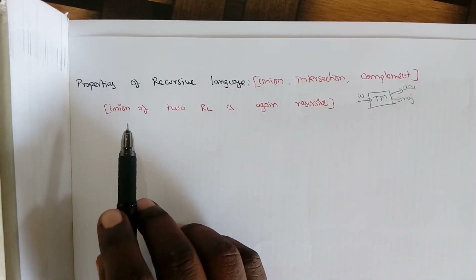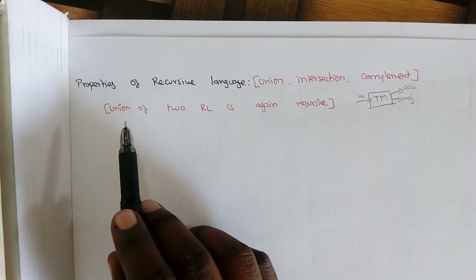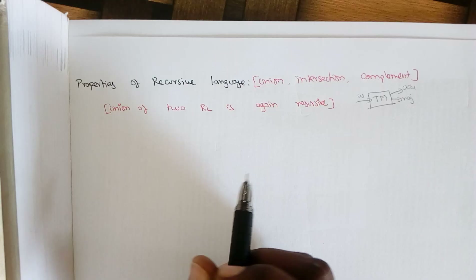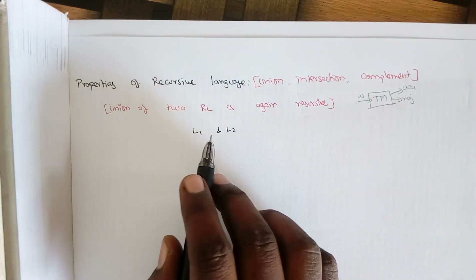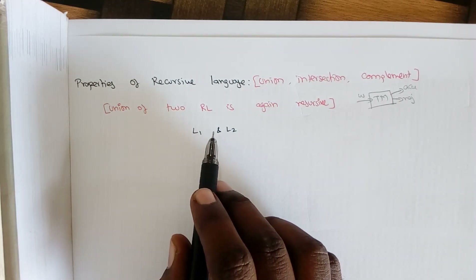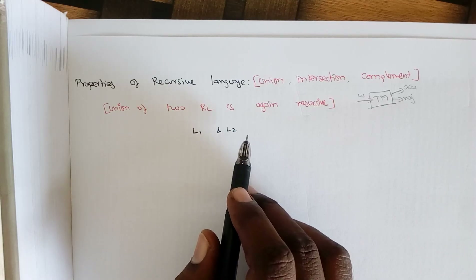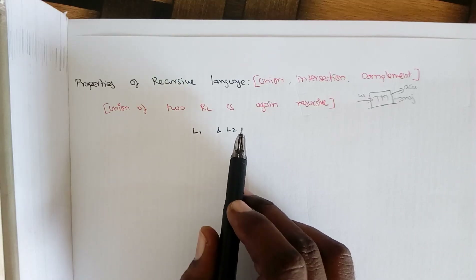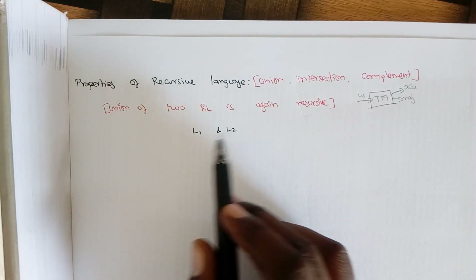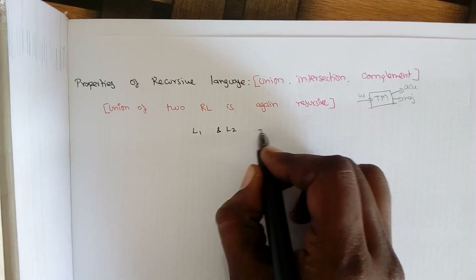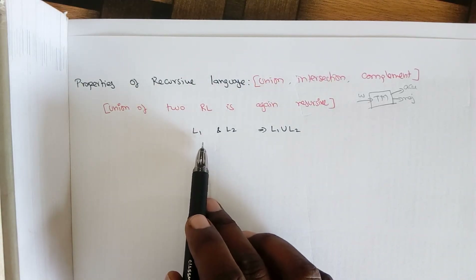Now when you have two recursive languages, the union of those two recursive languages is also a recursive language. For example, consider language L1 as the palindrome of a string, and L2 as the language that accepts all inputs starting with A. When the input is accepted by L1 or L2, we call L1 union L2 the language accepted by either L1 or L2.